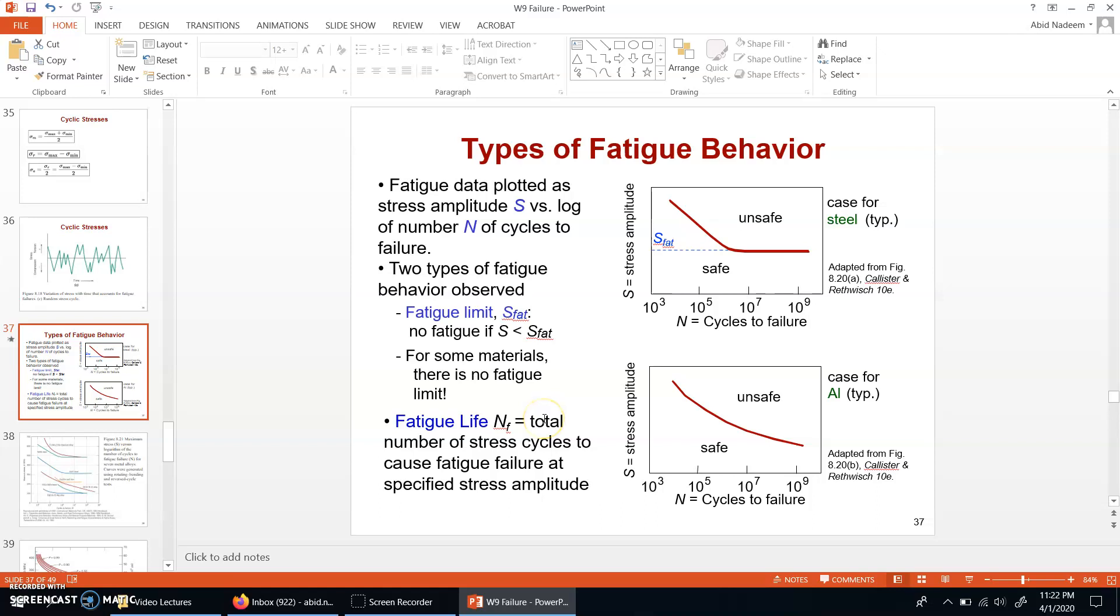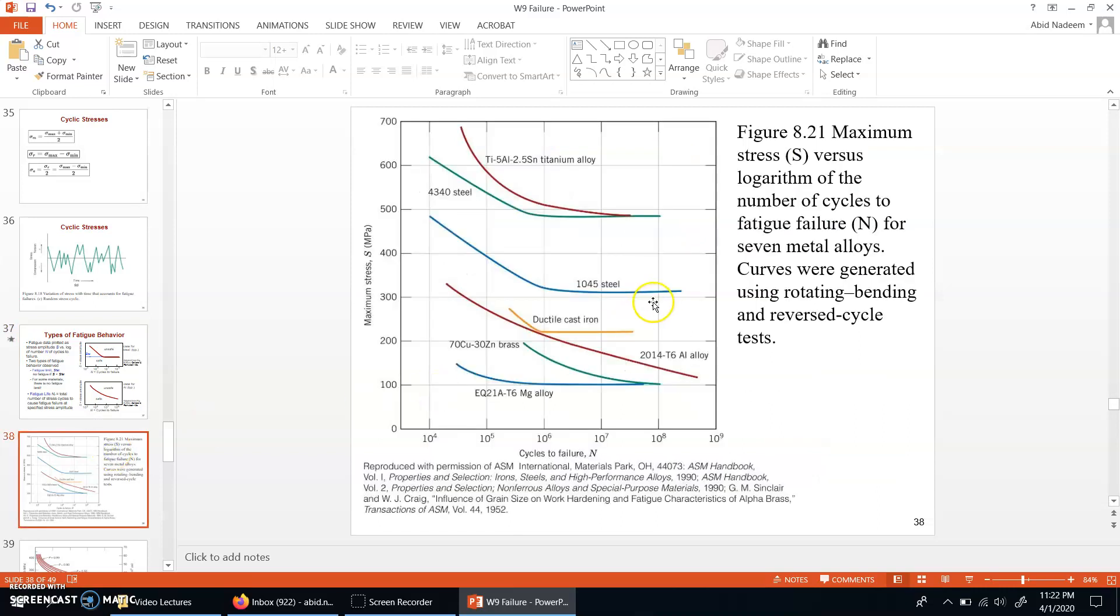Continuing from the previous lecture video clip, this slide shows the different metals: aluminum, titanium, steel, ductile cast iron and others. This is the S-N graph.